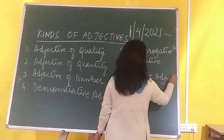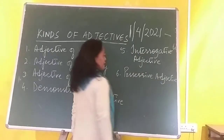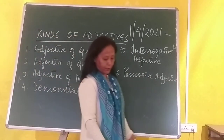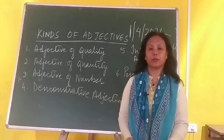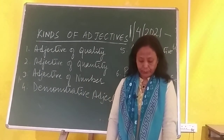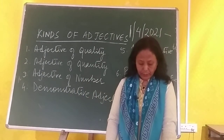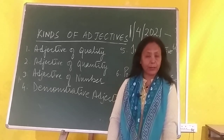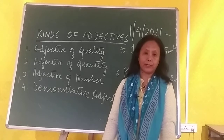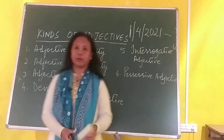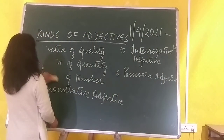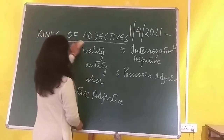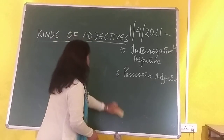So there are six kinds of adjectives. In adjectives of quality, you talk about quality. Like: 'The young man ran as fast as he could to catch the bus.' What is the quality there? The young man — 'young' is the quality.